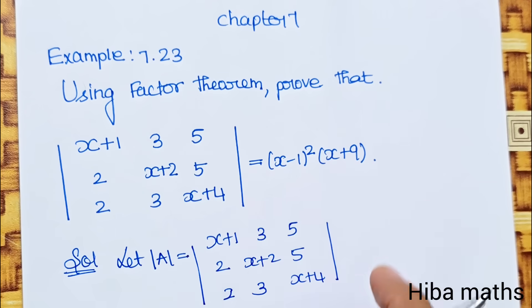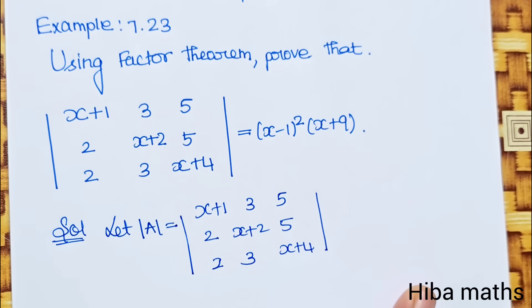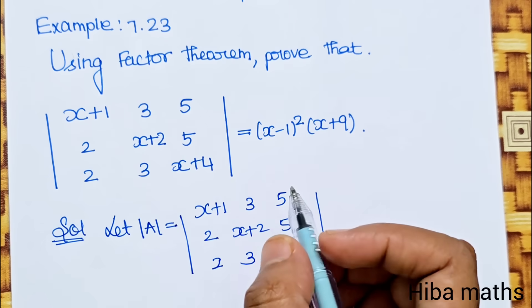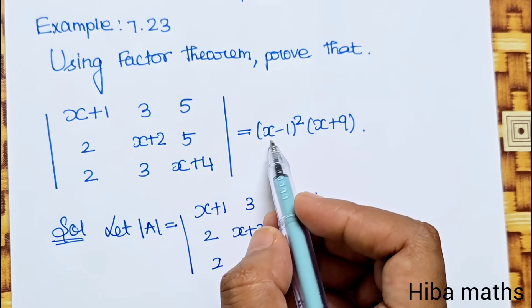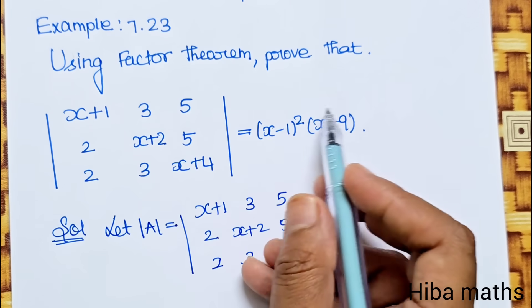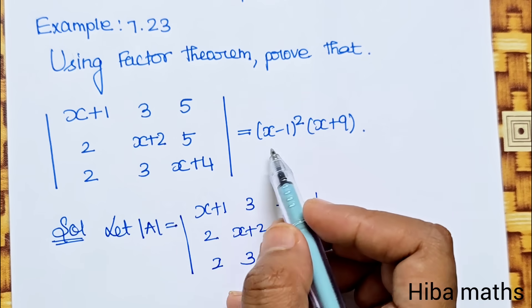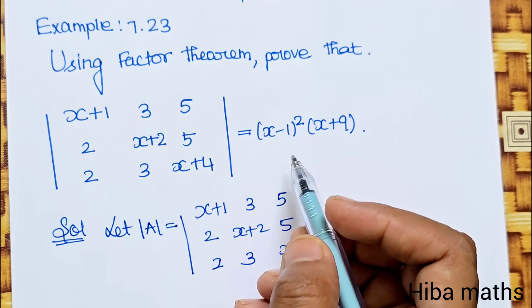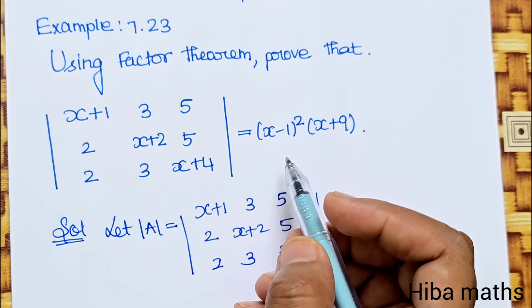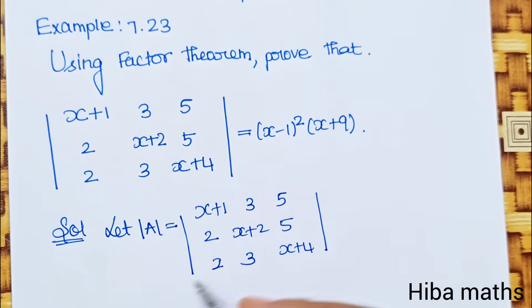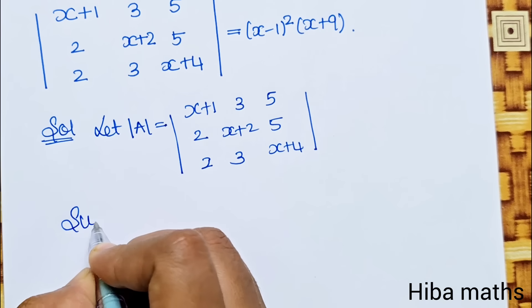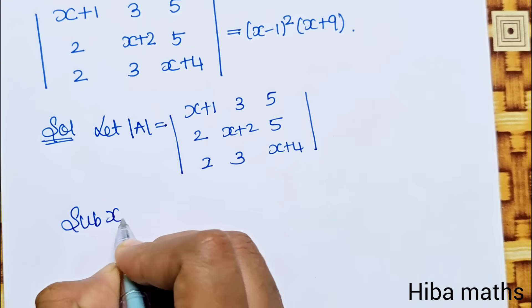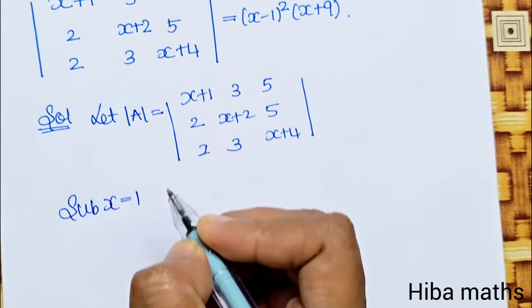Now, to prove the first factor, we look at the RHS. If (x-1) is a factor, substitute x equal to 1.